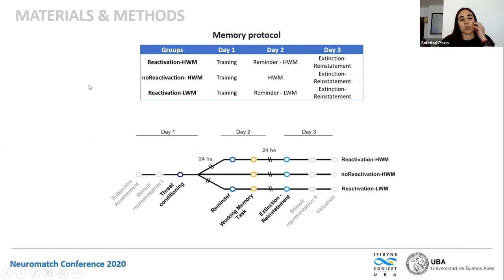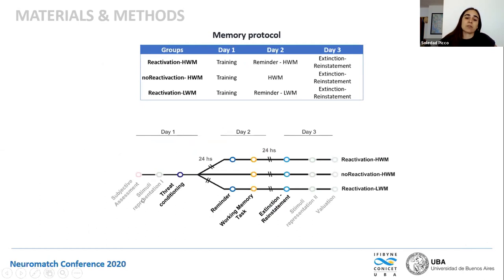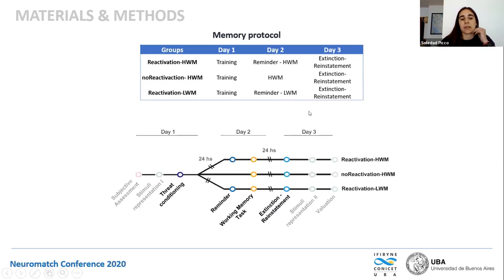In the study I'm going to show you today, we want to step forward and see the effect of interfering with the restabilization of this type of memory. We designed a three-day, three-groups protocol where on day one, subjects perform a threat conditioning training session. On day two, they had a reminder or not, and they performed a high working memory task or low working memory task. And on day three, participants did an extinction and reinstatement session — the classical testing of threat conditioning retention — and we also added cognitive tasks to assess cognitive bias of that memory.